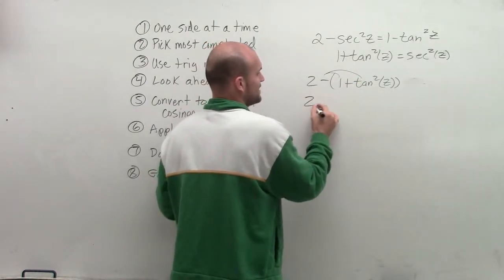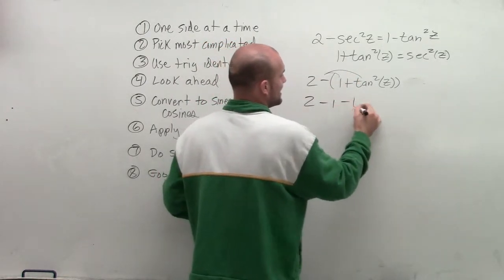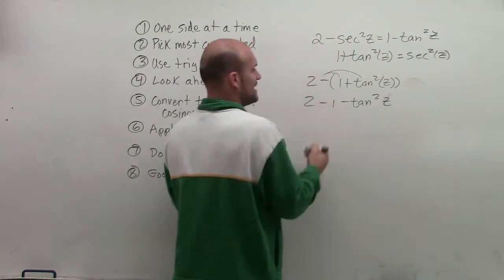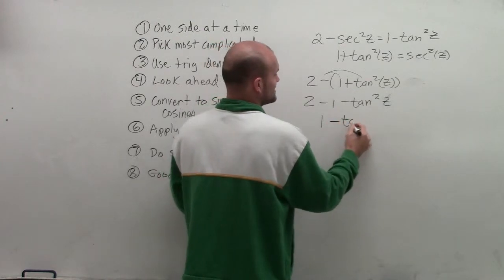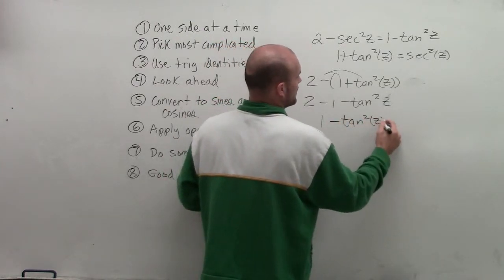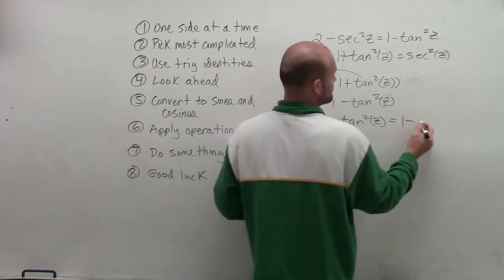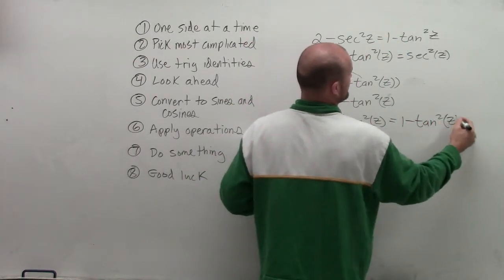Now what I'll do is I'll use the distributive property for my negative, for negative 1. So I have 2 minus 1 minus tangent squared of z. Well, 2 minus 1 is going to give me 1 minus tangent squared of z, which you can notice is now going to equal what my right side is, which is 1 minus tangent squared of z.